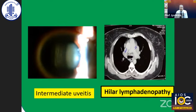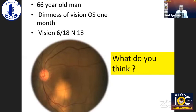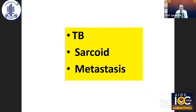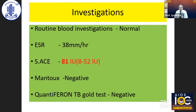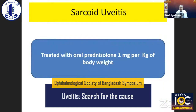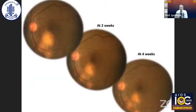Some posterior uveitis cases: a 68-year-old male with diminished vision in the left eye for one month, vision 6/18 and N18. You can see three nodules in the choroid. In our country, think of tuberculosis and sarcoid. As the patient is elderly, also keep the possibility of metastasis. Do Mantoux, Quantiferon TB-Gold test, HRCT chest, and serum angiotensin-converting enzyme. If all negative, do a PET scan to rule out metastasis. In this case, serum ACE was elevated, Mantoux was negative, Quantiferon TB-Gold was negative, and ESR was raised — indicating possible sarcoid uveitis. Treated with oral prednisolone, there was complete resolution of inflammation. Three months later, vision improved to 6/6 and lesions flattened.